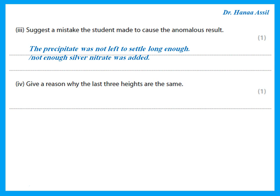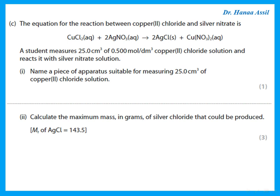The last three heights are the same because all the copper chloride was used up and any additional silver nitrate added was in excess. To measure 25.0 cm³ of copper chloride solution, a suitable piece of apparatus is a pipette; a burette could also be correct.